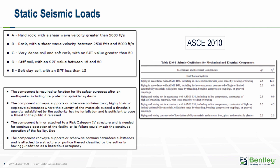The static seismic ASCE 7-2010 code presents criteria for the design and construction of structures subjected to earthquake ground motions. The specified earthquake loads are based upon post-elastic energy dissipation in the structure, and because of this, the requirements for design, detailing, and construction should be satisfied even for structures and members for which load combinations not containing earthquake loads indicate larger demands. For this code, required inputs start with site class — a classification assigned to a site based on types of soils present and their engineering properties as defined in Table 20.3-1.